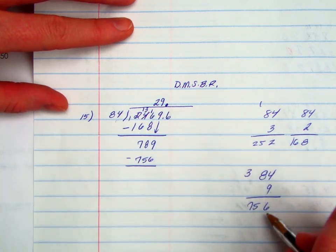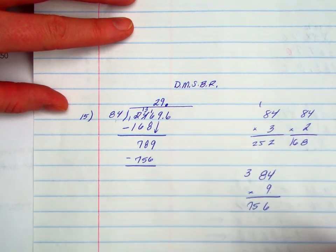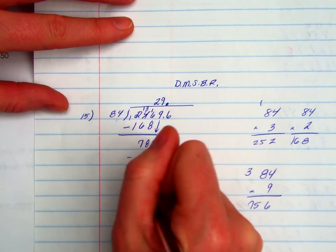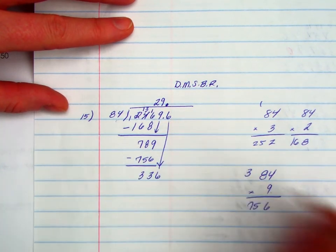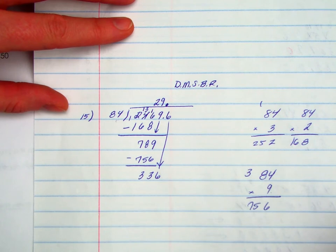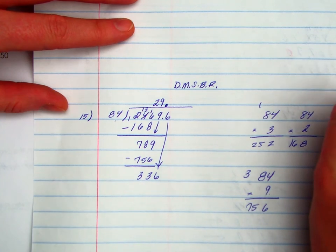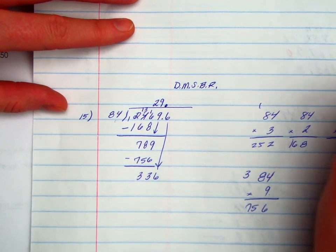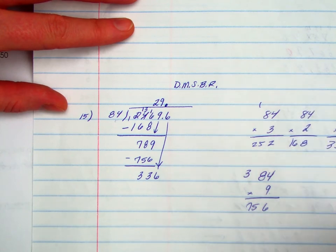So notice my thinking here is I'm just testing out numbers that can multiply together. This was a multiplication here. I'm going to subtract. I'm going to bring this all the way down. 84 goes into 336. I'm going to test again.